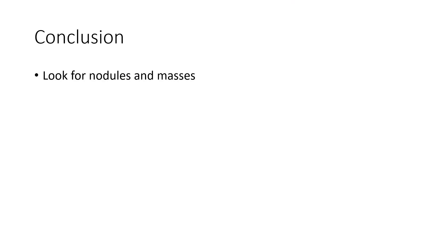To summarize: a nodule is a round or irregular opacity, well-defined or poorly defined, but less than three centimeters in diameter. Anything larger than three centimeters in diameter is a mass. In every X-ray, scan the pulmonary parenchyma for any mass lesion or nodule — that will be very helpful.